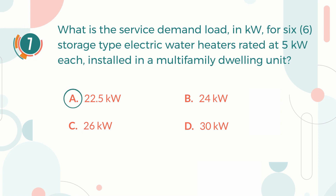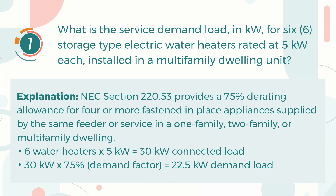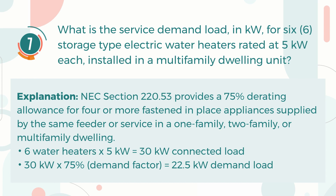The correct answer is A, 22.5 kW. Explanation: NEC Section 220.53 provides a 75% derating allowance for four or more fastened-in-place appliances supplied by the same feeder or service in a one-family, two-family, or multi-family dwelling. First we find the total connected load: 6 water heaters × 5 kW = 30 kW, then multiplied by 75% gives a demand load of 22.5 kW.